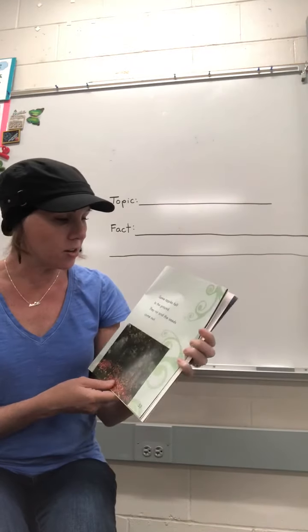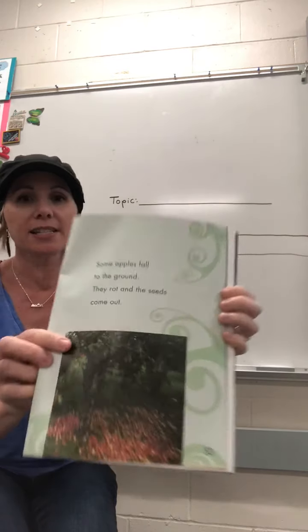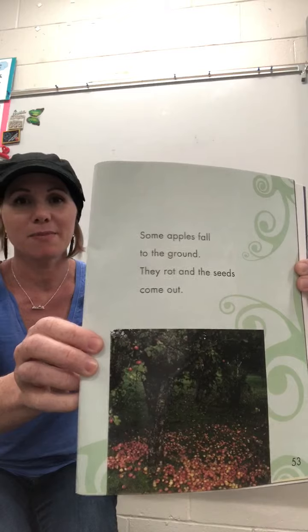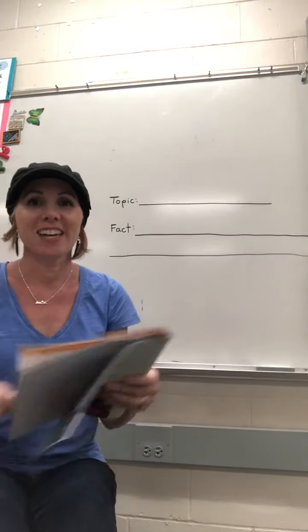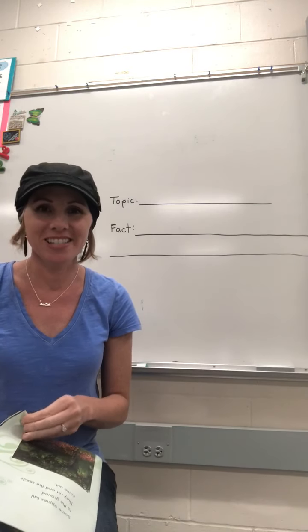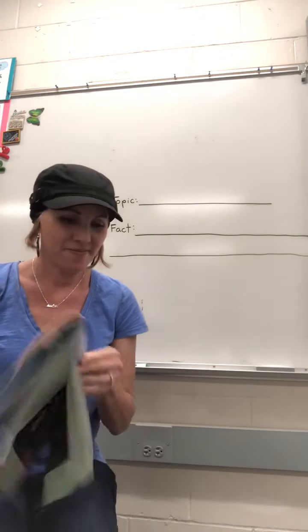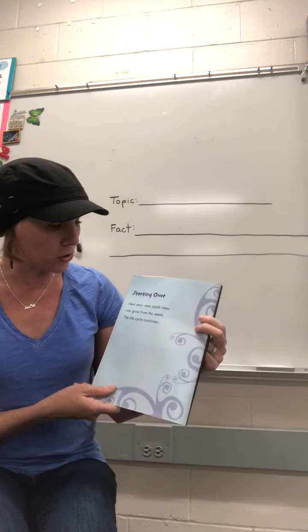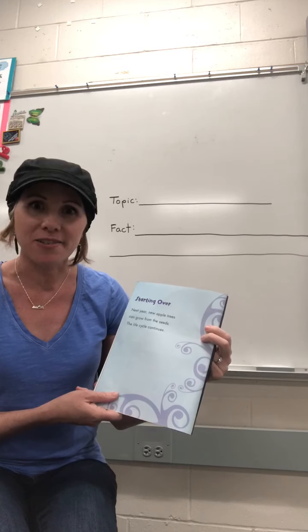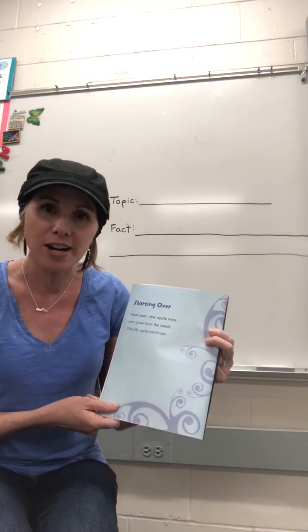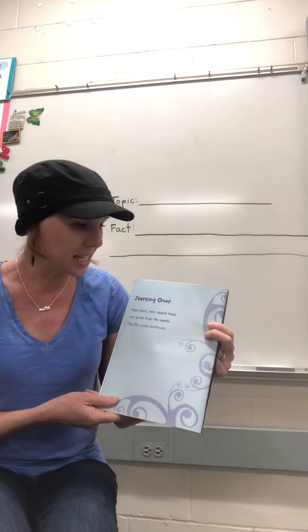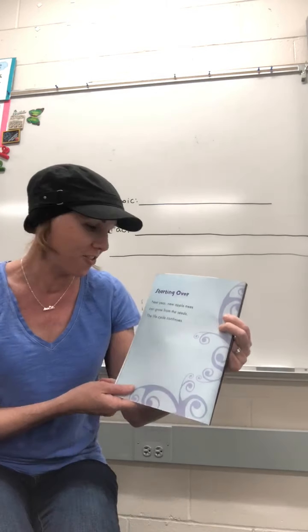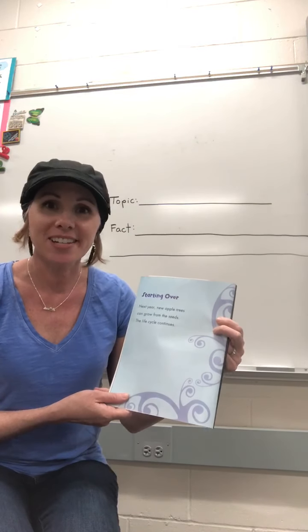Some apples fall to the ground. They rot and the seeds come out. I wonder what happens when the seeds come out — do you guys have any predictions? Next year new apple trees can grow from the seeds. So when apples fall on the ground the seeds come out, and then new apple trees can grow from the seeds. The life cycle continues.